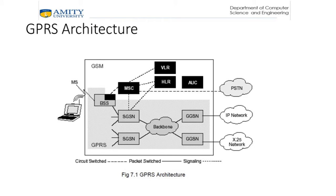As you can see in the diagram, this is the architecture of GPRS and how it is assembled. It uses the GSM architecture for voice. GPRS supports a class of network nodes called GPRS Support Nodes (GSN) to offer packet data. GSNs are responsible for delivery and routing of data packets between the Mobile Station (MS) and external packet data networks (PDN).